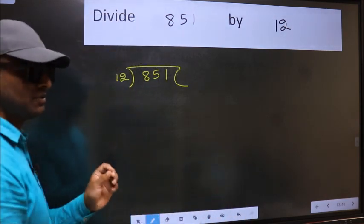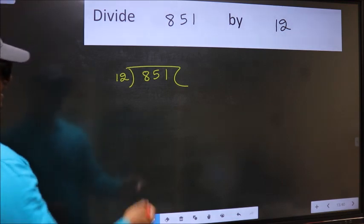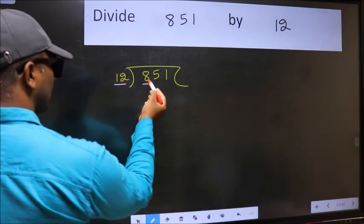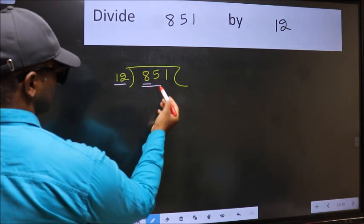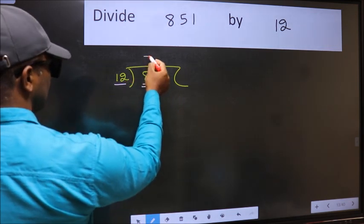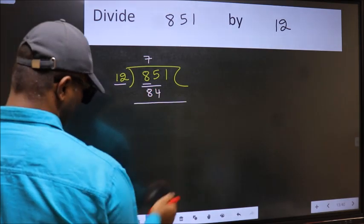This is your step 1. Next, here we have 8 and here 12. 8 is smaller than 12, so we should take two numbers: 85. A number close to 85 in the 12 table is 12 times 7, which is 84.